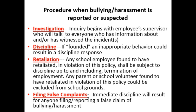Procedures when bullying or harassment is reported or suspected: Want to know what happens if a student, parent, or colleague complains about being bullied or harassed? These are the steps that follow. Investigation: inquiry begins with employees' supervisors who will talk to everyone who has information about and/or has witnessed the incident. Discipline: if founded, inappropriate behavior could result in a disciplinary response. Retaliation: any school employee found to have retaliated in violation of this policy shall be subject to discipline up to and including termination. Any parent or school volunteer found to have retaliated could be excluded from school grounds. Filing false complaints: immediate discipline will result for anyone filing a false claim of bullying or harassment.